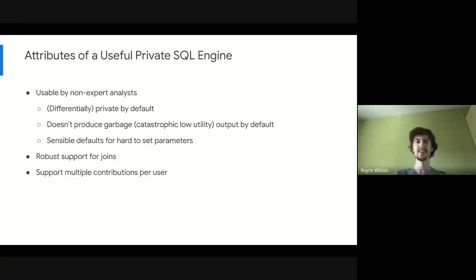In addition, we also want robust support for what we consider important features of SQL, so joins are kind of a core requirement for what we consider to be useful, and we require support for them. In the same line as joins, we want a model that supports multiple contributions per user, attributing multiple records in a database to a single user. Some more naive applications, this might not be the case. So this was also a hard requirement for our model.